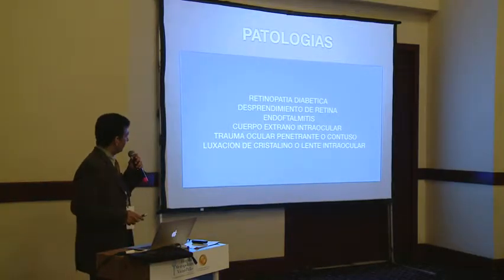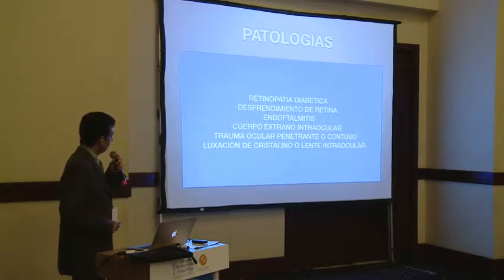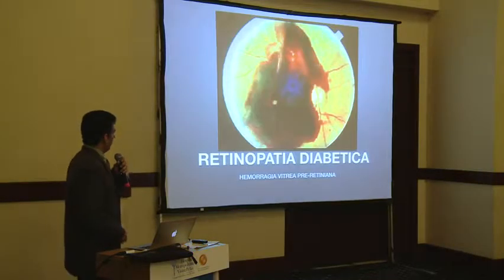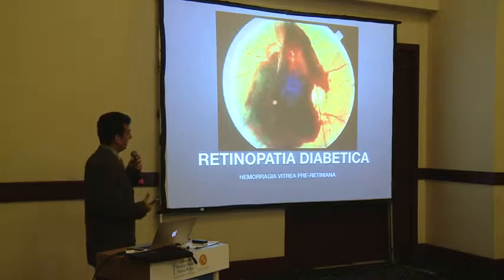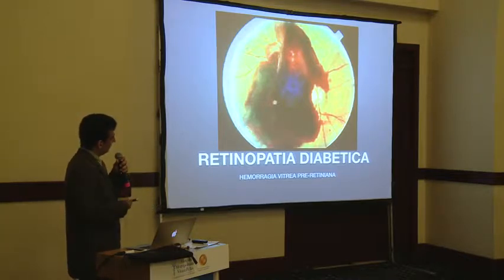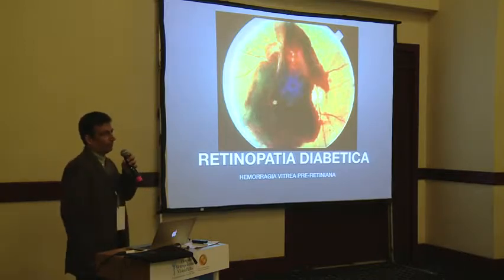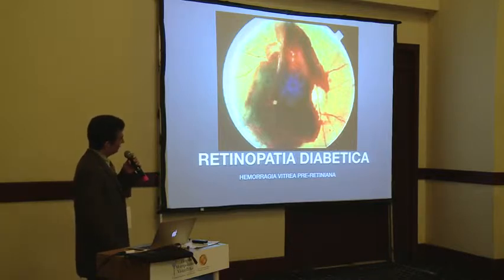Las patologías que más frecuentemente abordamos con la vitrectomía son: retinopatía diabética, desprendimiento de retina, endoftalmitis posquirúrgica o no posquirúrgica, cuerpo extraño intraocular, trauma ocular penetrante o contuso, y luxación de cristalino o lente intraocular. La retinopatía diabética es la causa más común de hemorragia vítrea o de tracción vitrorretiniana y desprendimiento de retina traccional — ya es de las etapas finales — y se trata de hemorragias vítreas o fibras avasculares contráctiles que desprenden la retina.